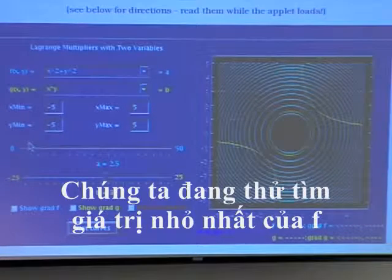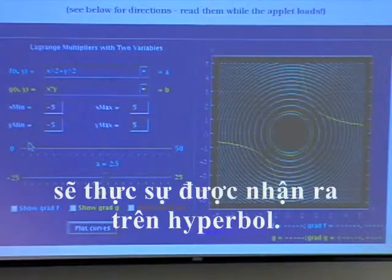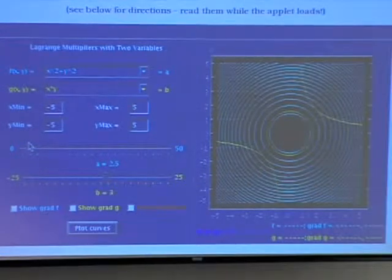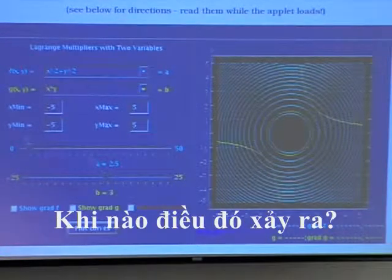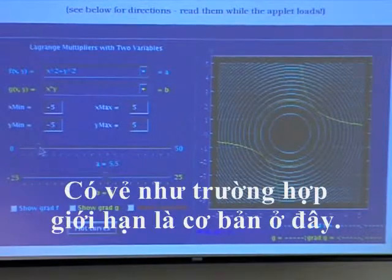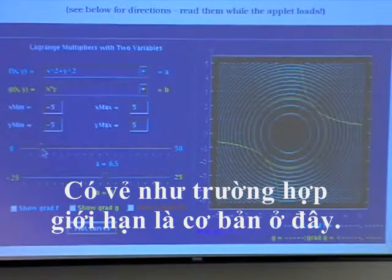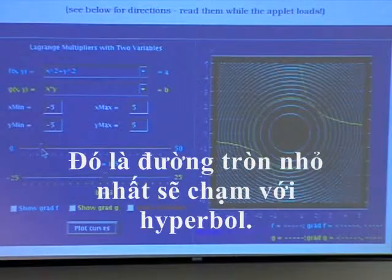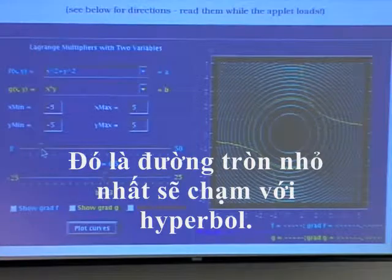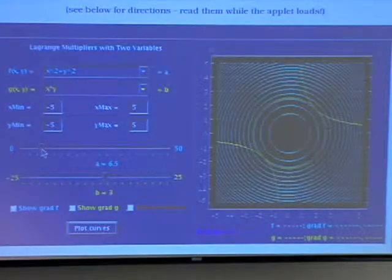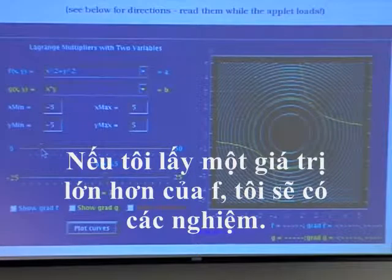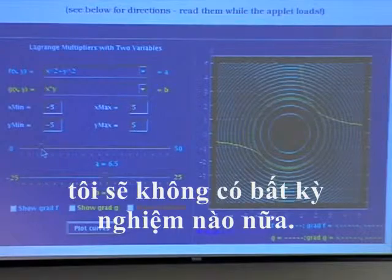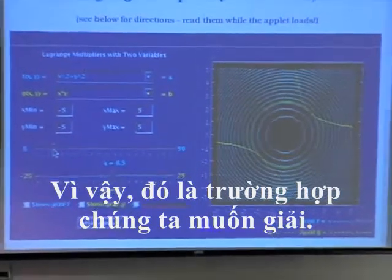If we decrease the value of f that we want to look at, there is somehow a limit value beyond which we can't go. And that's the minimum of f. We are trying to look for the smallest value of f that will actually be realized on the hyperbola. When does that happen? I have to backtrack a little bit. It seems like the limiting case is basically here. It's when the circle is tangent to the hyperbola. That's the smallest circle that will hit the hyperbola.